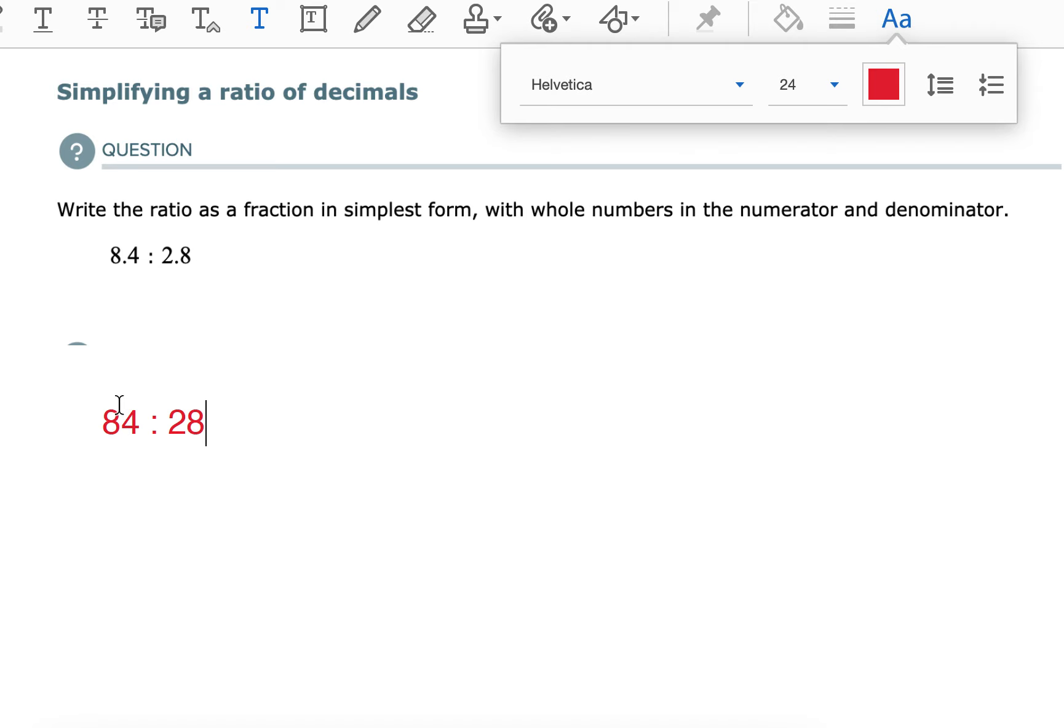And we have to simplify this ratio, which means it's just like a fraction. You can divide the left and the right both by the same number. So if they're even, I always say just start with that. Divide them both by 2. So 84 divided by 2 gives us 42. 28 divided by 2 gives us 14.